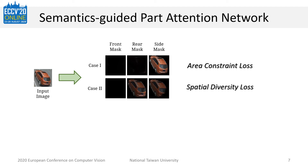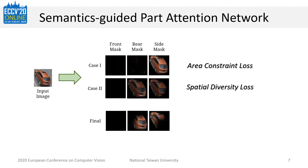As for tackling case 2, we introduce the Spatial Diversity Loss. This loss guides each attention branch to generate non-overlapping part masks. For example, in case 2, the network should learn to generate a side mask and a rear mask. After simultaneously training with these three losses, our SPAN can finally produce the desired results.